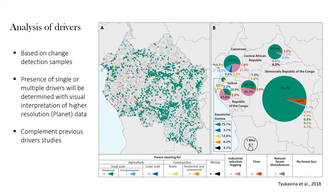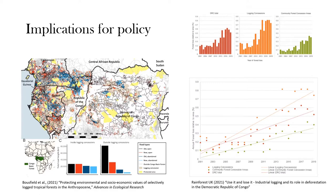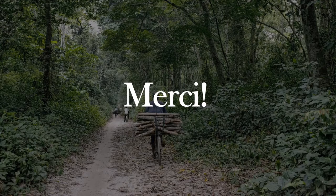Our objective is to specifically identify drivers associated with both deforestation and degradation. Based on the example from Chucavina et al. 2018, we will use a sampling approach to identify the presence of not only single but multiple drivers at different locations throughout the Congo Basin. This will be validated with Planet data to provide a robust dataset on types of changes. This has important policy implications: our donor, the Central African Forest Initiative (CAFI), is interested in understanding which drivers and land use decisions drive deforestation. For example, forest loss rates are much different in community-managed areas versus logging concessions, helping build tools to support land use planning.